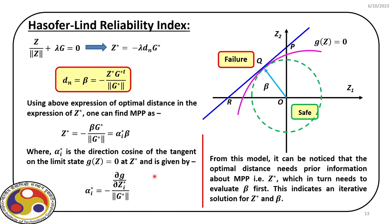We can represent z star as alpha_i star times beta, where alpha_i star are the direction cosines, expressed as minus the first partial derivative of g with respect to zi divided by the norm of capital G star. Since z star requires both direction cosines and beta, and beta is the optimal distance itself, we cannot solve this expression directly — we must solve it iteratively, starting with an initial guess and updating the estimate of beta.